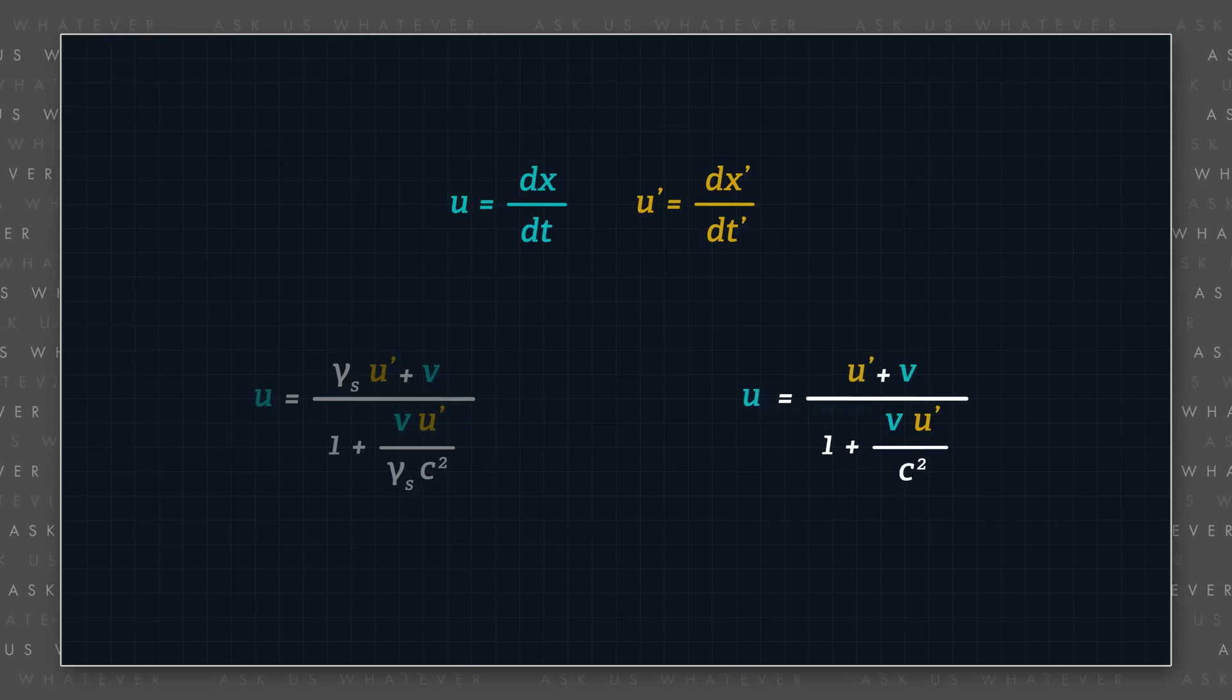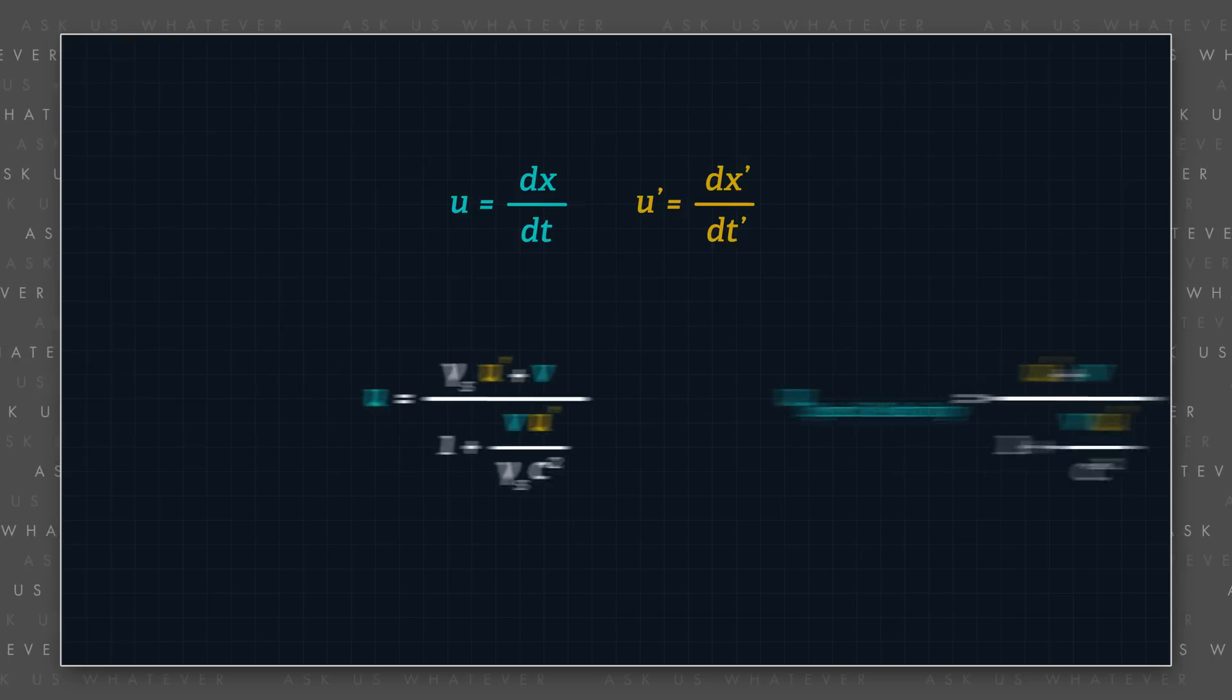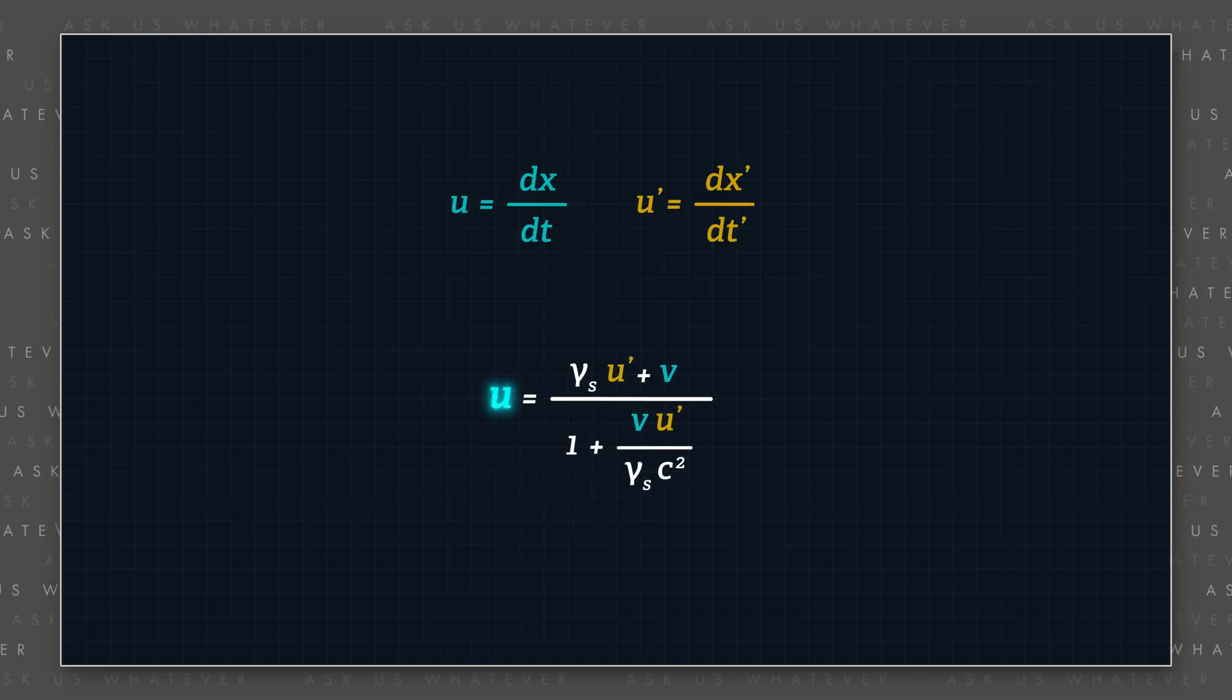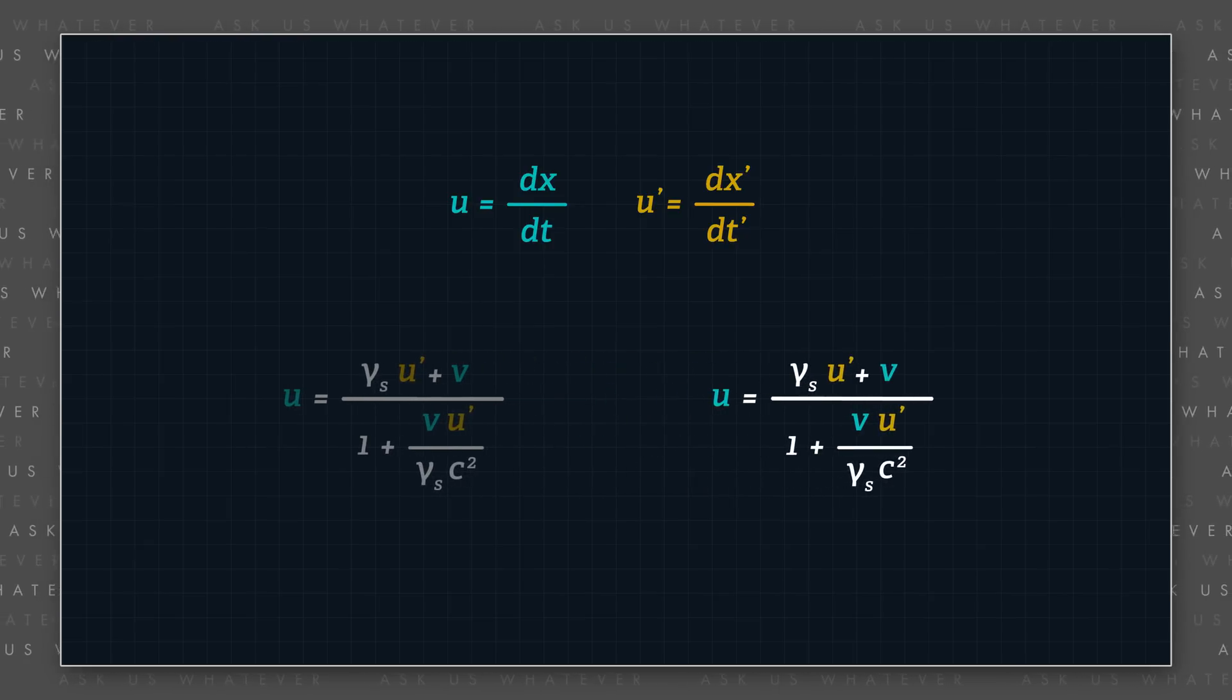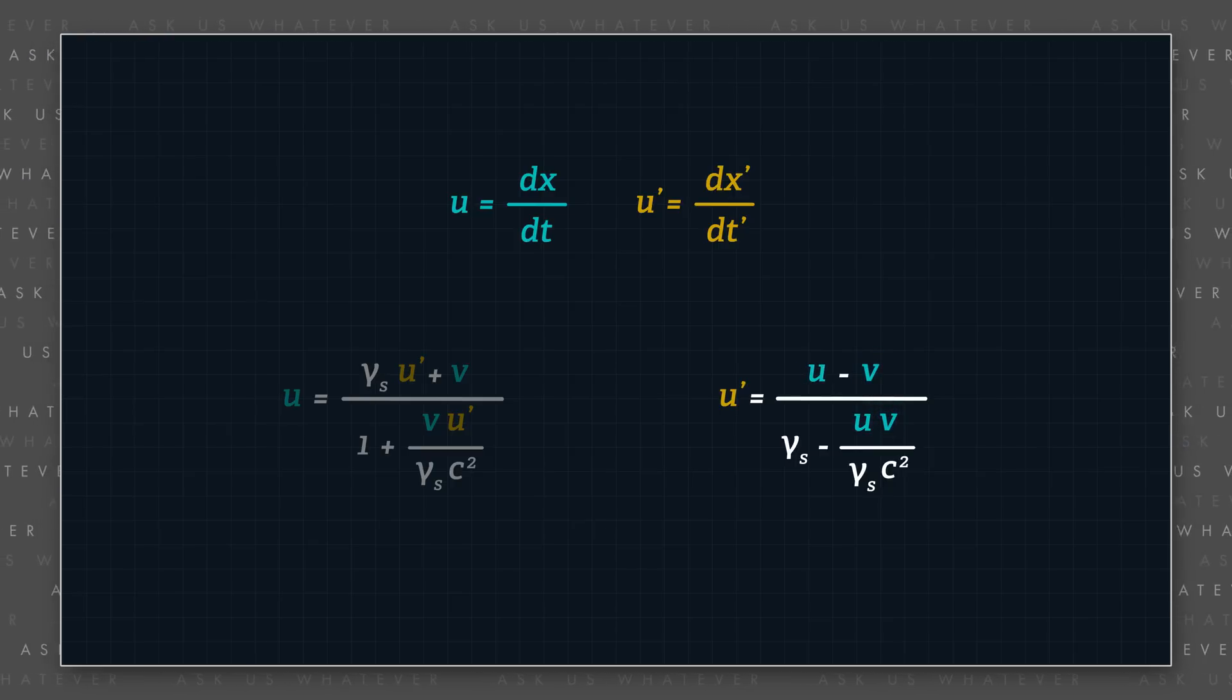This formula resembles the relativistic velocity addition formula from special relativity, except for the gamma s factors. It allows us to compute the speed u of a frame s prime object or observer relative to frame s. We can rearrange the formula to find the speed of the frame s prime object or observer u prime as observed from within frame s prime, provided that we know the speed v of frame s prime and the speed of the object or observer u with respect to frame s.